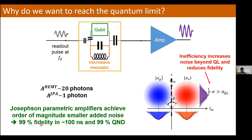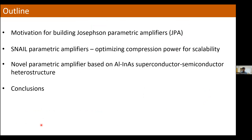I hope that gives you a general sense of why JPAs are interesting. Now I'm going to talk specifically about a particular type of Josephson paramp which I call the SNAIL parametric amplifier and describe it in more detail.